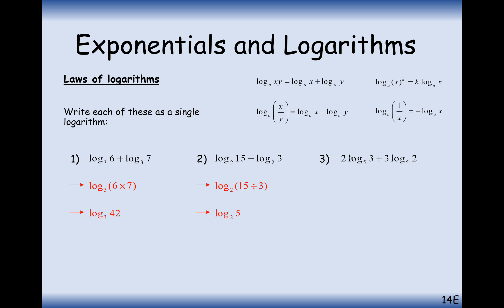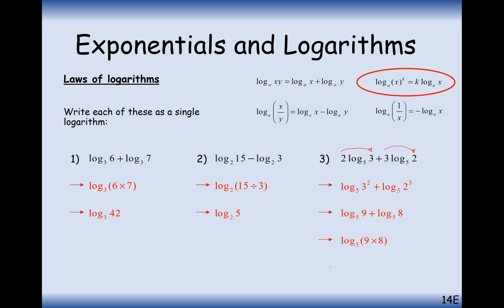Let's look at a slightly more complicated one: 2 log base 5 of 3 plus 3 log base 5 of 2. First, bring the coefficients inside as powers onto the numbers inside the logs. So it becomes log base 5 of 3 squared plus log base 5 of 2 to the power of 3. Work out those values - 3 squared is 9 and 2 cubed is 8 - then when we add logs together we multiply their values together: log base 5 of 72.